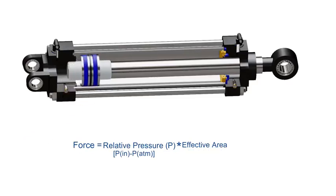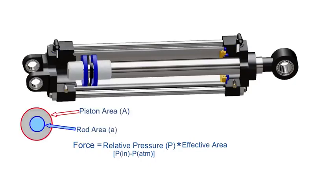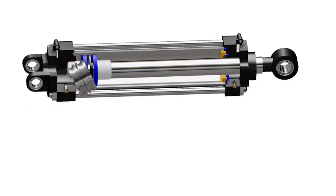During retraction, the effective area of the piston is reduced because air cannot exert pressure on the area of the rod. This gives us the theoretical force as relative pressure multiplied by the partial area of the piston. Frictional losses at the interface of different surfaces also need to be considered when designing a pneumatic cylinder. The diameter of the rod and the length of the stroke are also determining factors for the capacity of the actuator.